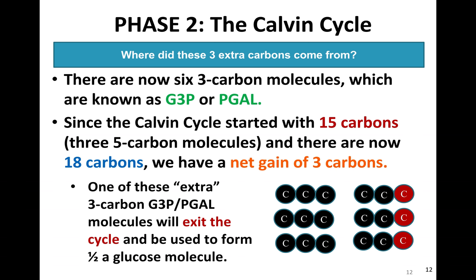Now there are six three-carbon molecules. We call these G3P, or sometimes PGAL. Since the Calvin cycle started with 15 carbons and we now have six three-carbon molecules, we have 18 carbons total — a net gain of three carbons. One of those extra three-carbon G3P molecules will actually exit the cycle and be used to form half of a glucose molecule, since glucose is made up of six carbons total.